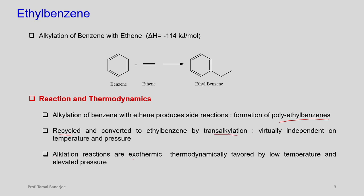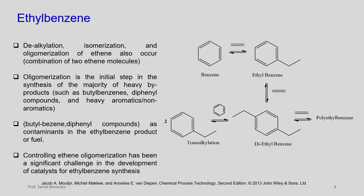Alkylation reactions are exothermic — favored by low temperature and high pressure. The transalkylation reaction, which converts polyethyl benzene back to ethyl benzene, is virtually independent of temperature and pressure. Other reactions that can occur include dealkylation, isomerization, and oligomerization of ethylene. Since ethylene is being added, ethylene can itself oligomerize, or instead of producing ethyl benzene, it can produce isomers of ethyl benzene or diethyl benzene.